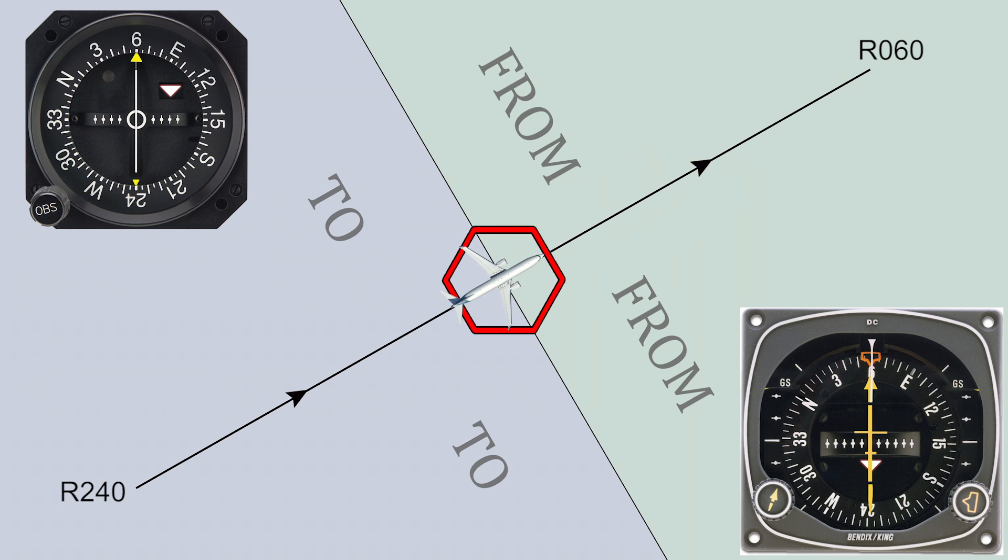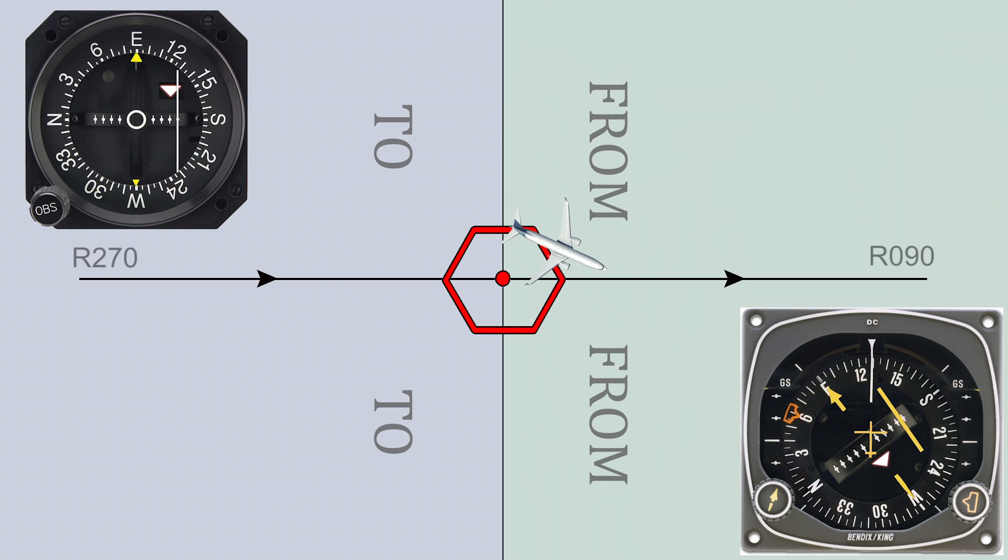But since there is no signal reception in a small cone above the station, sometimes referred to as the cone of silence, after losing the signal, we will wait for the indicator flag which was showing a to indication to change to a from indication. Now that the aircraft overflew the station on the course of 060 degrees, a turn can be made to intercept the new desired course after selecting it on our indicator.